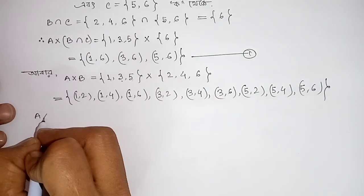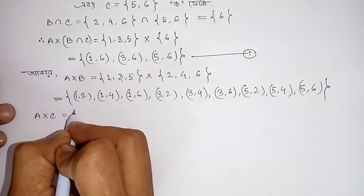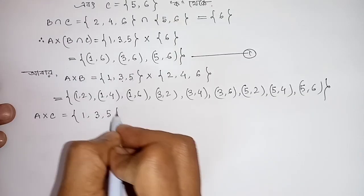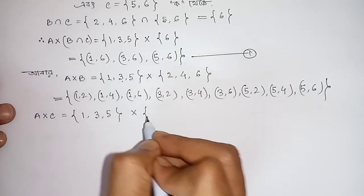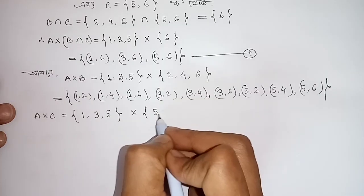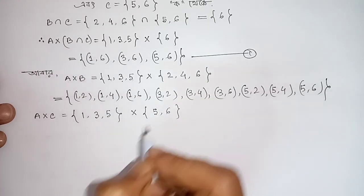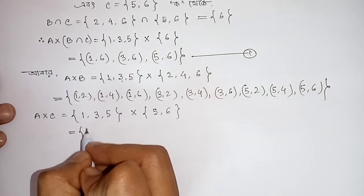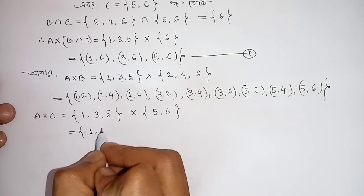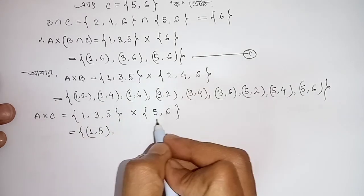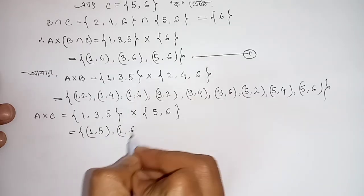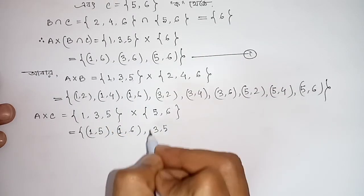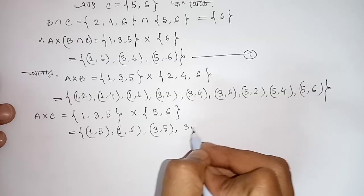Continuing: (5,4), (1,7), (5,3), (5,5), (5,3), (6), (5,3), (1.5), (1.6), (3.5), (3.5), (3.6).